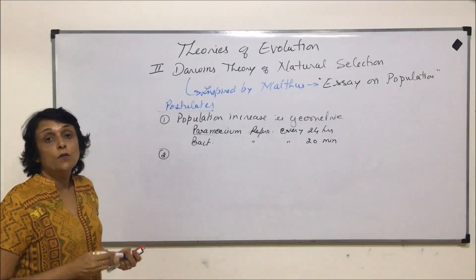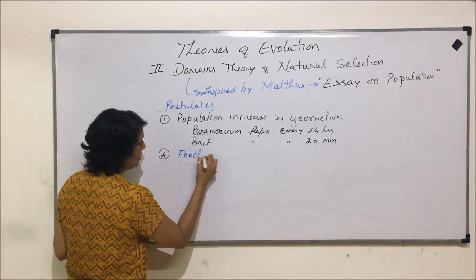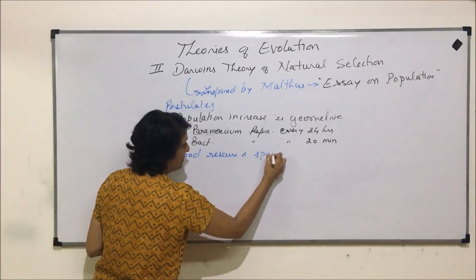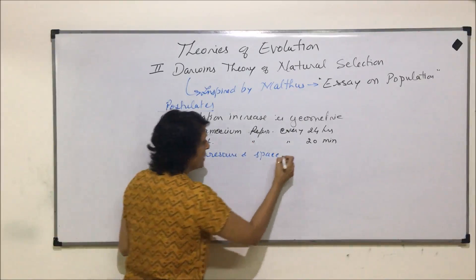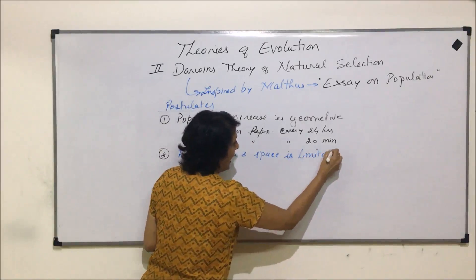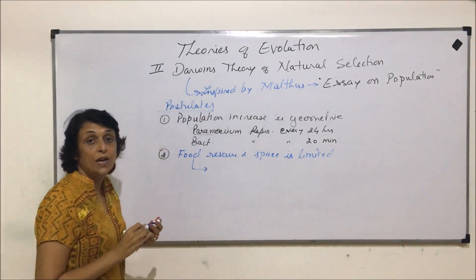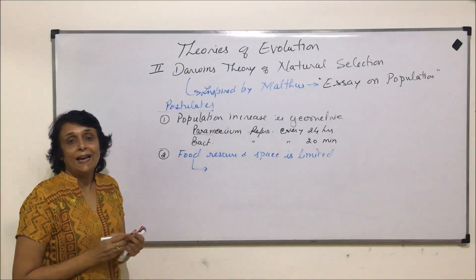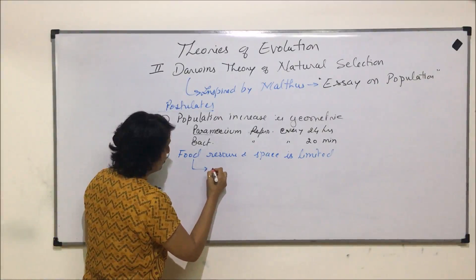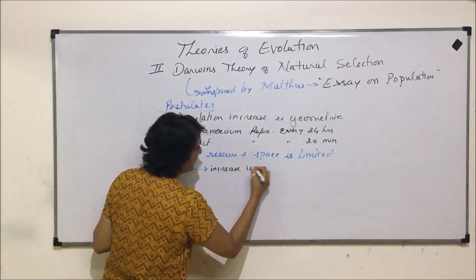The second postulate is that the food resource and space available for these organisms is limited. The food quantity or food resource grows in an arithmetic manner. So food growth or food increase is arithmetic.